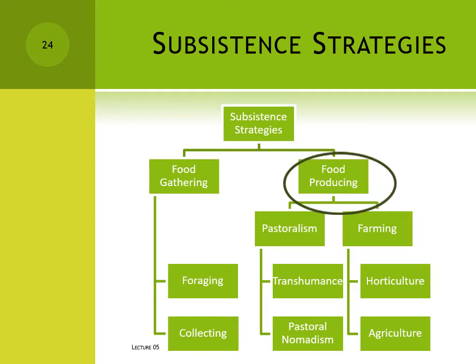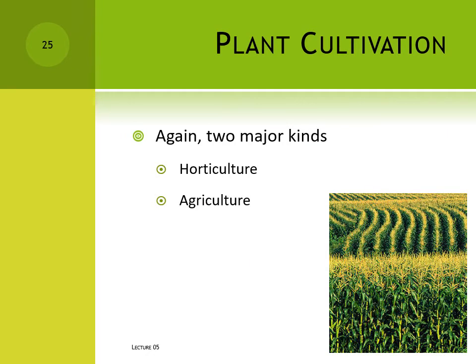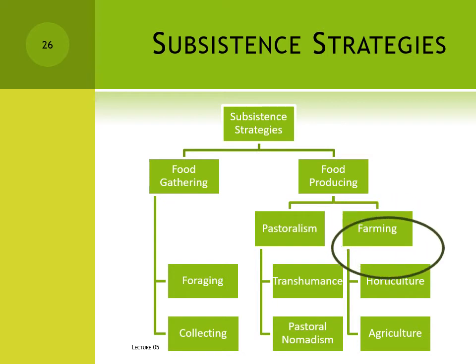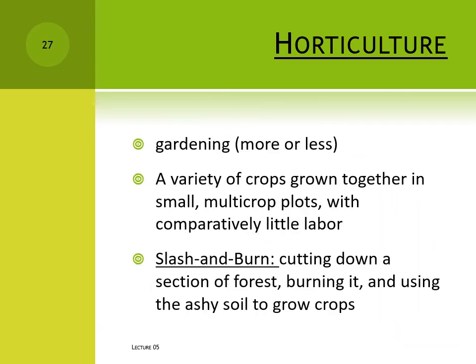Let's turn now to farming, which today is the most important form of food production by far. The strategy is usually divided into two broad categories: horticulture and agriculture. Horticulture is more or less gardening. Many small tribal societies in Africa or South America get their food this way. Horticultural societies cultivate small plots of land, growing a variety of crops with relatively little investment of energy.